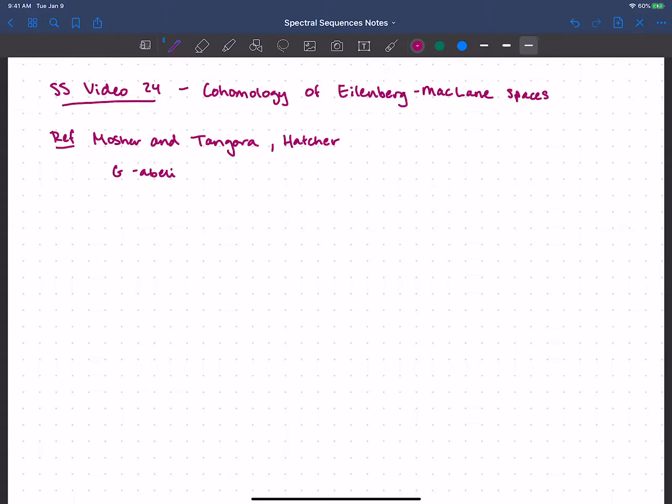Let's let G be some abelian group, and we'll think about X. This will be some (n-1)-connected space. The main example that I really want to have in mind is the Eilenberg-MacLane space, say K(G,N).